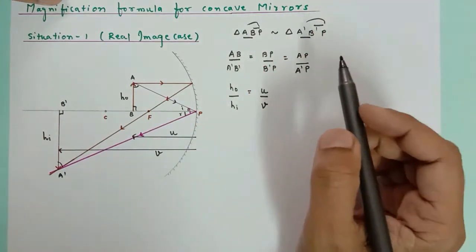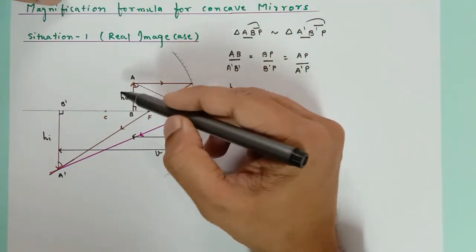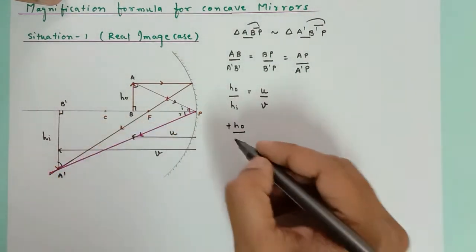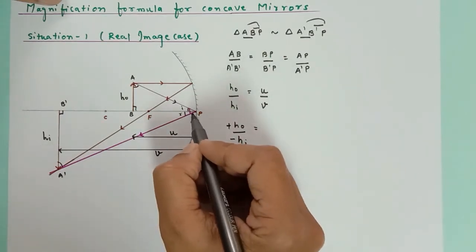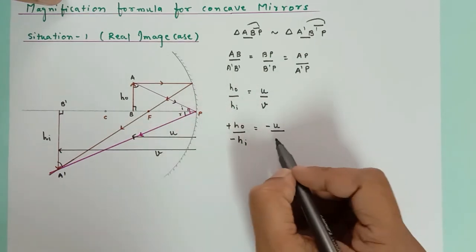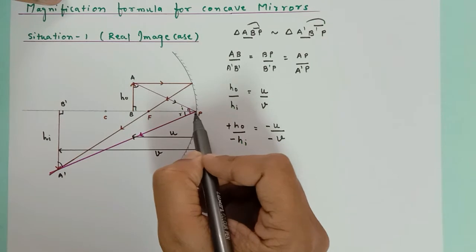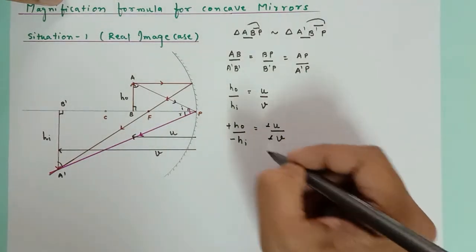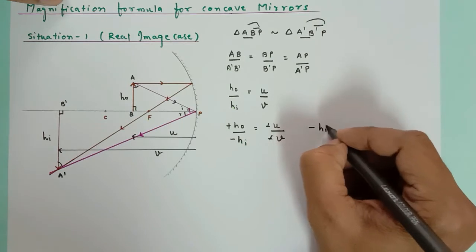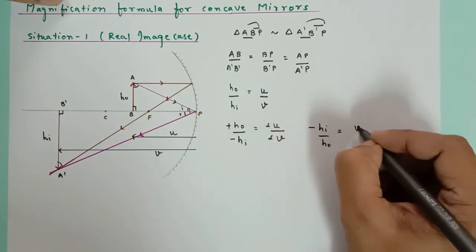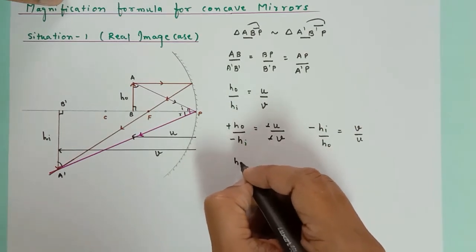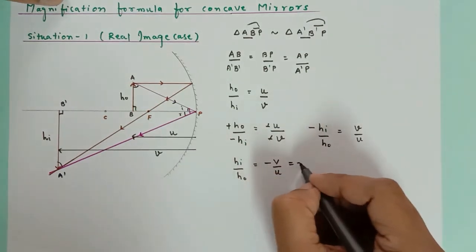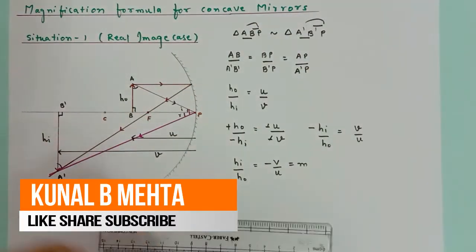Now I'm going to apply sign conventions. Height above the principal axis is positive, so ho is positive. hi is below the principal axis so it is negative. Object distance is minus u; image distance is also minus v because we are measuring the distance from the pole in this direction whereas the incident ray is in the other direction. So ho upon hi equals minus u upon minus v. Cancelling and taking the reciprocal: hi upon ho equals minus v by u. This is the formula for magnification.